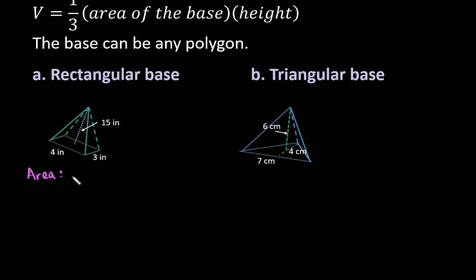And so remember that the area of a rectangle is the length times the width. So then if we plug it into the volume formula, we would have one-third times the length, and it doesn't matter whether you use four for your length or three for your length, because three times four is the same as four times three.